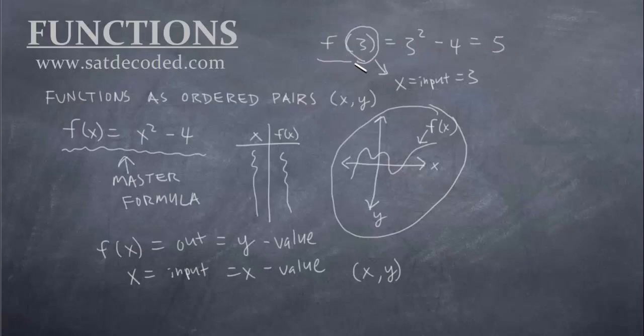So f(3) the entire function gives us 5 which is an output. And remember outputs are y values. So now we have an x value 3 as well as a y value 5. So the ordered pair that we just solved was (3,5). That fits into this format perfectly.